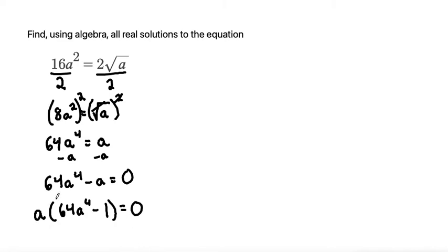Now that we have it into a factored form, let's set each of our factors equal to 0 separately. So I'm going to set a equals 0 and I'll set 64a to the power of 4 minus 1 equal to 0. The a equals 0 is already solved, so we can just leave that solution.